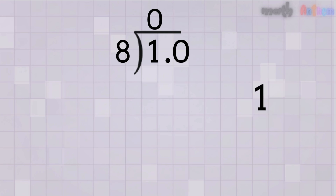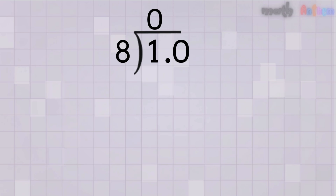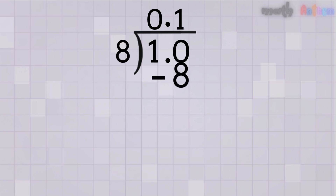Just so you know, 1, 1.0, and 1.00 all mean the same number — we add zeros to help us keep dividing. We also place a decimal point in the quotient, right above the decimal point in the dividend. Now instead of asking how many times 8 goes into 1, we ask how many times 8 goes into 10. The answer is 1 time. We write 1 in the quotient right after the decimal point. Multiply: 8 times 1 equals 8. Subtract: 10 minus 8 equals 2 — we still have a remainder of 2, so we're not done yet.